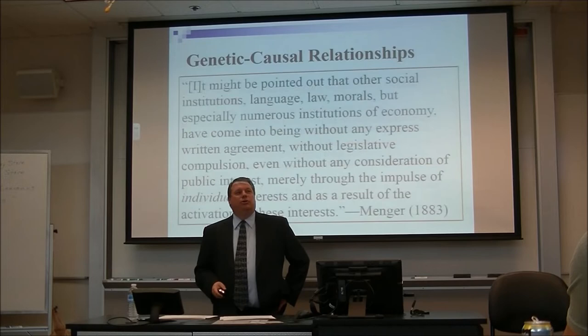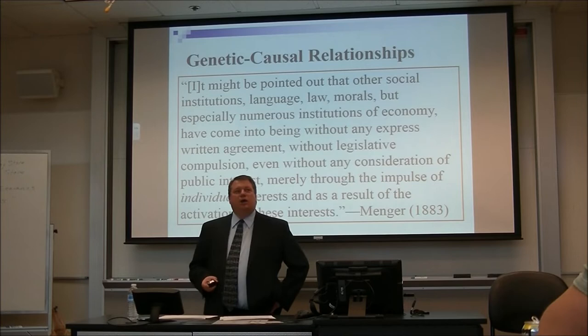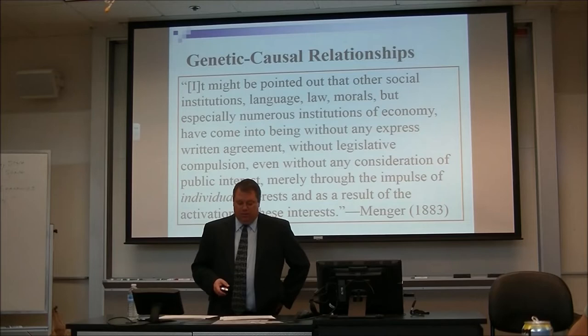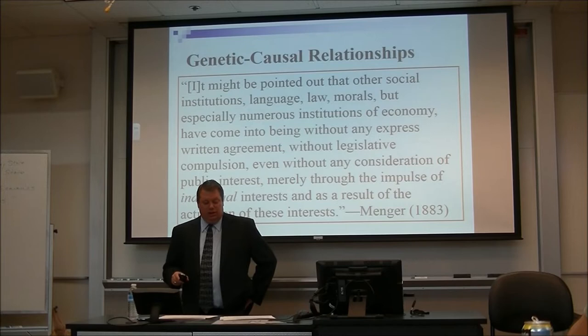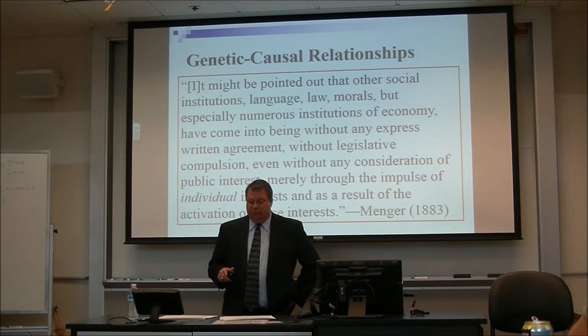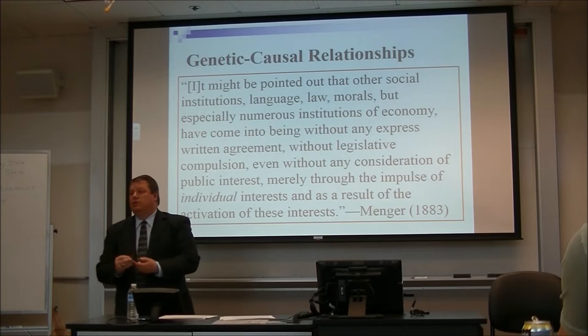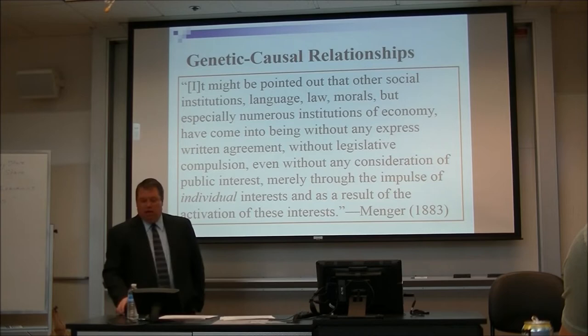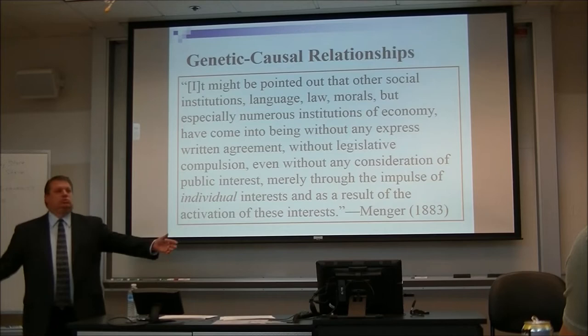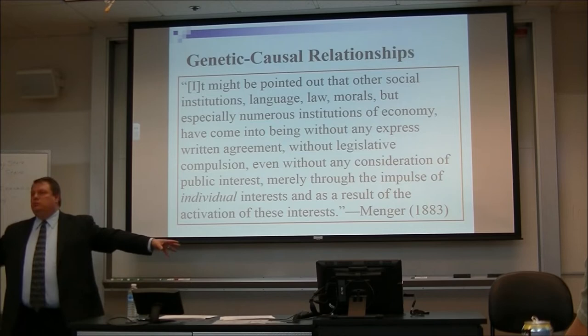Menger's approach is called the genetic causal theory. He says, 'It must be pointed out that other social institutions — language, law, morals — and numerous institutions of economy have come into being without any express written agreement, without legislative compulsion, even without any consideration of public interest, merely through the impulse of individual interest and as a result of the activation of these interests.' Many Austrian economists take this statement and run with it — they're looking not just at buying and selling but at law, morals, language, and social institutions across a huge spectrum.